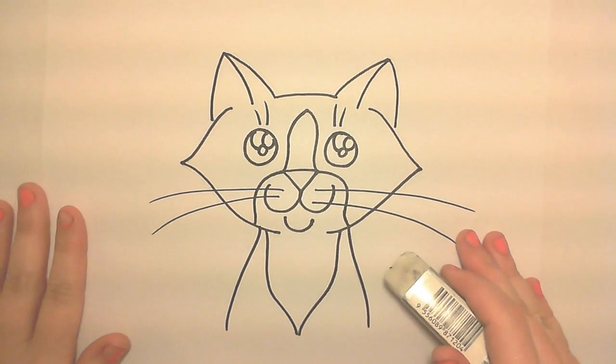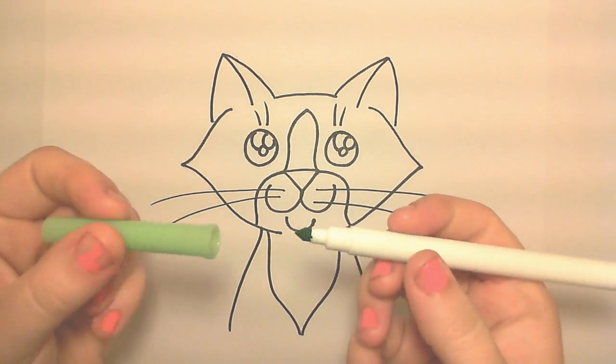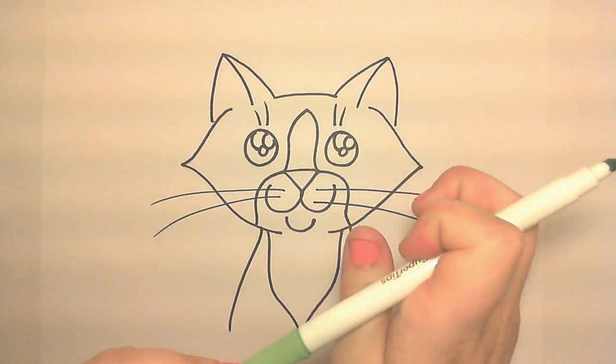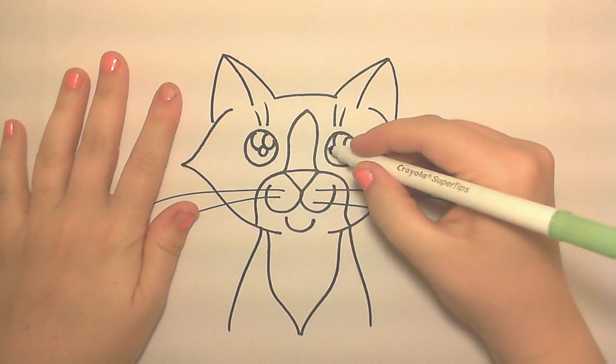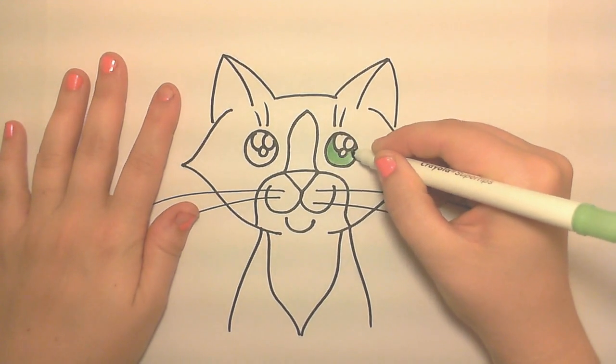So now we have a finished kitty cat, ready to color. Gorgeous kitty. So I think I'm going to start with the eyes. I love the eyes. And I picked out this lime green, very bright. And I think it's going to contrast nicely with that orange. And it will really pop.